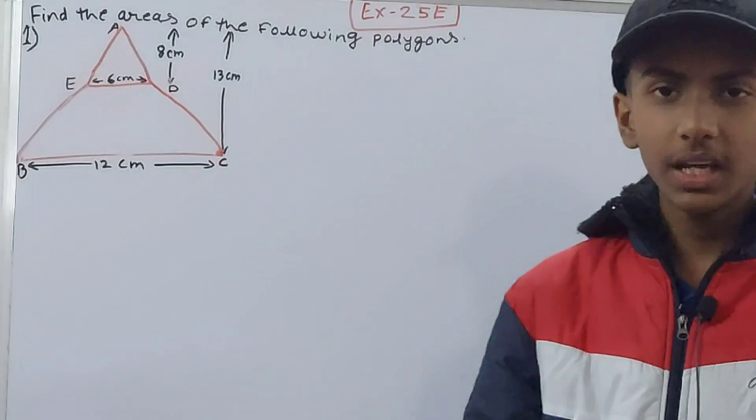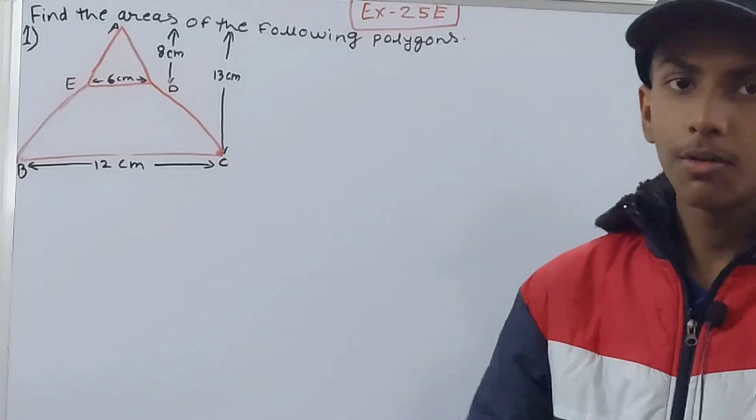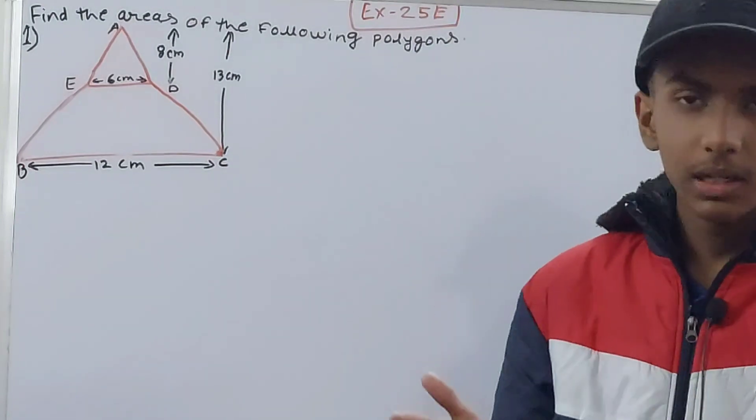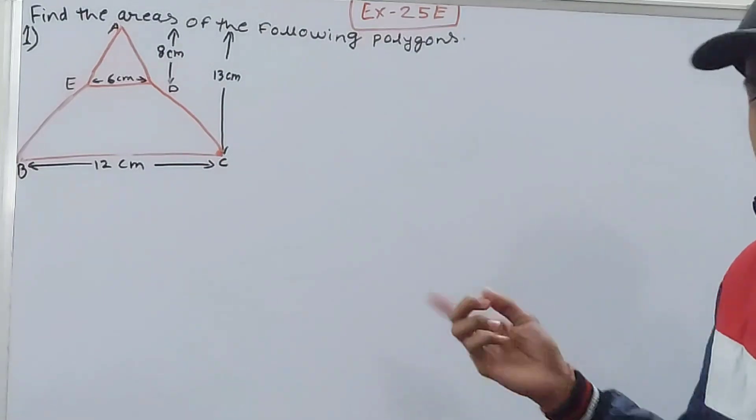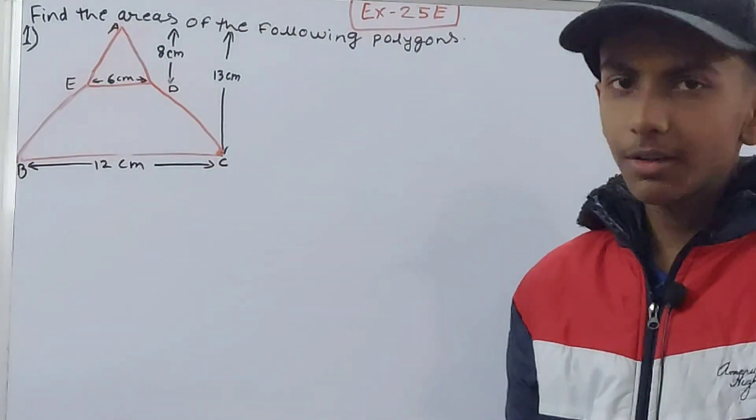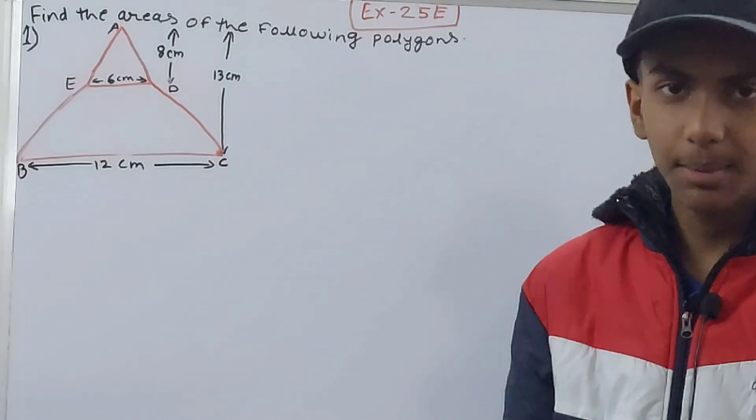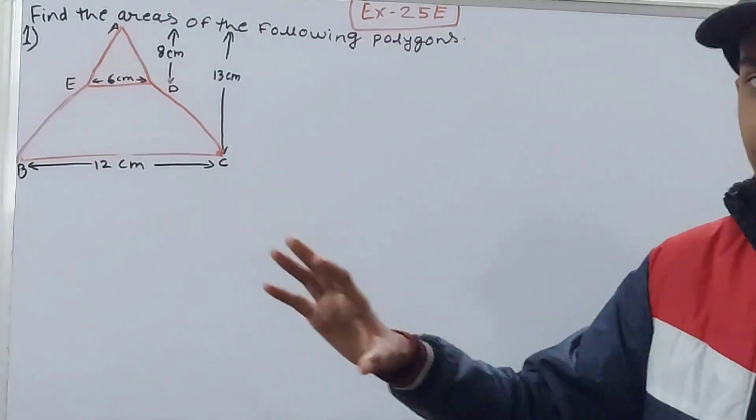We have to find the area of the polygons. Till now we have studied to find the area of square, rectangle, parallelogram, rhombus, and trapezium—also triangle. In this polygon we also have other figures like hexagon, pentagon, heptagon, octagon, and so on. We don't have any formula for calculating the area of those figures directly, but we can calculate the area if we divide them into figures we know.